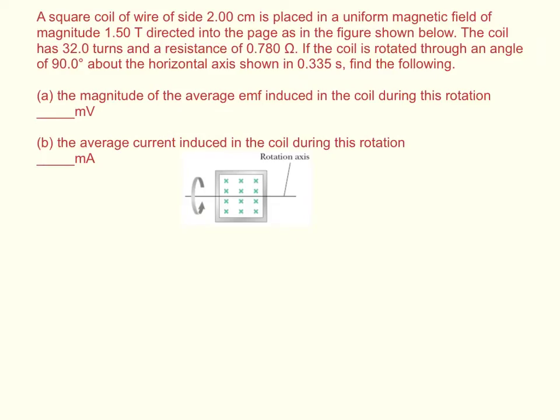A square coil of wire of side 2 centimeters is placed in a uniform magnetic field of magnitude 1.5 tesla directed into the page as shown in the figure below. The coil has 32 turns and a resistance of 0.78 ohms. If the coil is rotated through an angle of 90 degrees about the horizontal axis shown in 0.335 seconds,